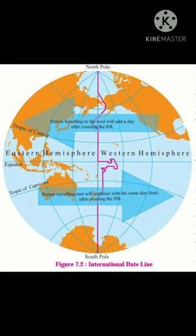In order to pass the IDL only over ocean areas, the IDL is turned to the east or west of 180 degrees. Hence, the IDL is not a straight line. In other words, it is drawn in such a way to avoid passing over land. Now let us understand in detail.